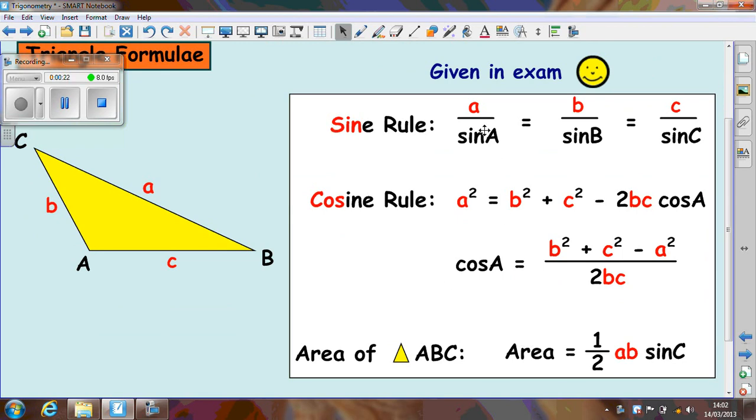So at the top we have the sine rule, next we have the cosine rule to work out the size of a side. Underneath that we have the cosine rule to work out the size of an angle. And right at the bottom we have the formula for the area of a triangle.